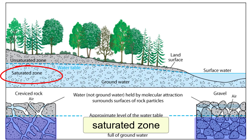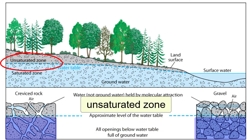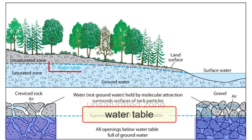We call the saturated portion of the rock in an aquifer — the part that's filled with water — the saturated zone. The portion of the aquifer that sits above this zone might be a little bit wet but does not have its pore spaces filled with water; most likely they're filled with air. We call that region the unsaturated zone. The boundary between these two zones is known as the water table.